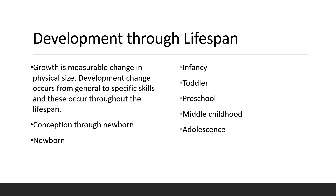The newborn is given an APGAR rating at one minute and five minutes. This is based on their color, heart rate, reflexes, muscle tone, and respiration. Each of these areas is scored as zero or up to a two. The best APGAR score is a 10, and what is considered normal is any score that is seven or greater.